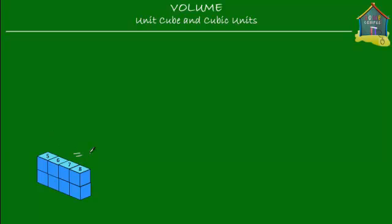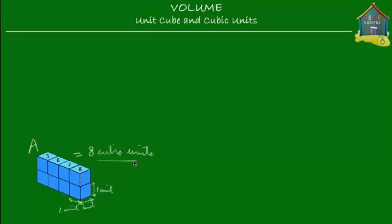So the volume of this object is equal to eight cubic units, because each of these cubes has sides equal to one unit — the length is one unit, the breadth is one unit, and the height is also one unit. Let's call this solid A — its volume is equal to eight cubic units.